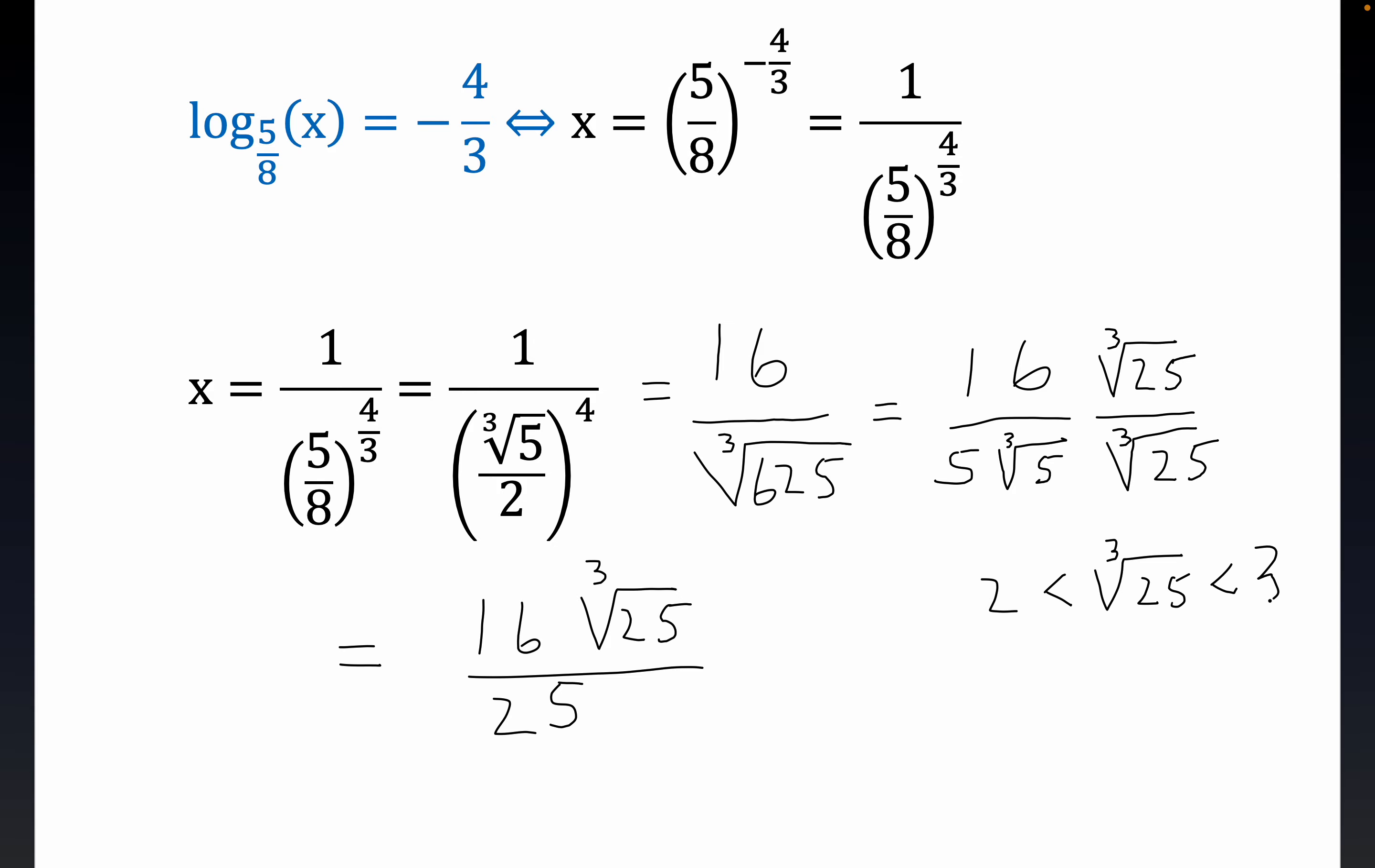Now, why is that true? Well, 2 cubed is 8, but 3 cubed is 27. So 25 is between 8 and 27. So you see what that means? This number would be between 2 and 3. It wouldn't even be as big as 3. And so you see, this would be a number that would still be less than, let me just write this down. This would be clearly less than 50 over 25, which is equal to 2.